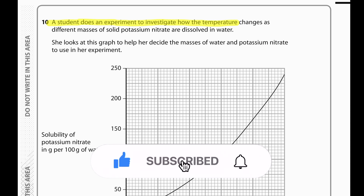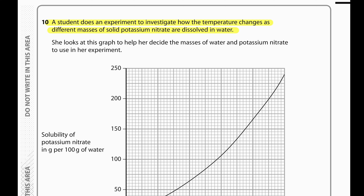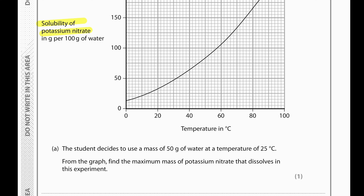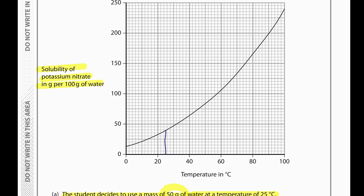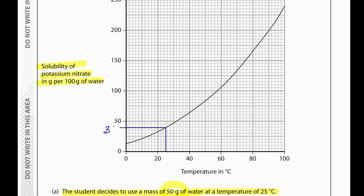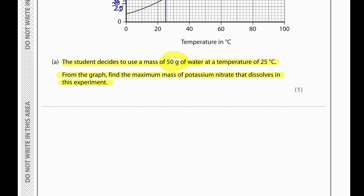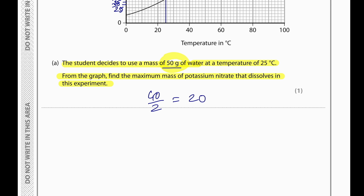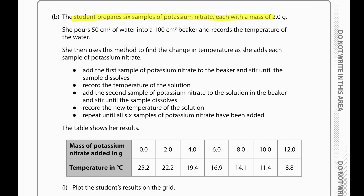A student investigates how temperature changes as different masses of solid potassium nitrate are dissolved in water. Using 50 g of water at 25°C, from the graph the solubility is approximately 40 g per 100 g water, so the maximum mass dissolving in 50 g water is 40 ÷ 2 = 20 g. The student prepares six samples of potassium nitrate each with a mass of 2 g.